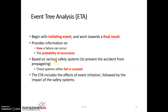You determine each safety system as either fail or succeed. So you have your fail or success of each safety system inside your ETA. Your ETA will also include the effect of event initiation followed by the impact of the safety system. Basically your ETA will consist of the event of initiation, how the failure can occur based on various safety systems, the probability of occurrence, and the impacts of these safety systems.